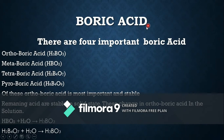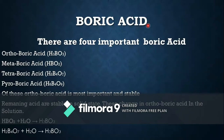Welcome students and audience. In today's class we discuss about boric acid. There are four important types of boric acid: number one, orthoboric; metaboric; tetraboric; and pyroboric. Today our concern is orthoboric acid, which is also simply called boric acid.